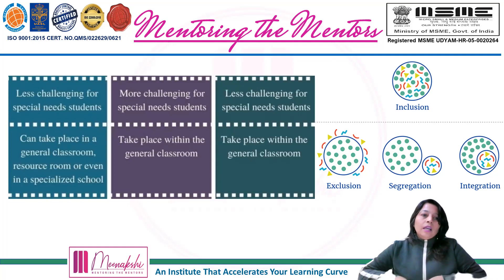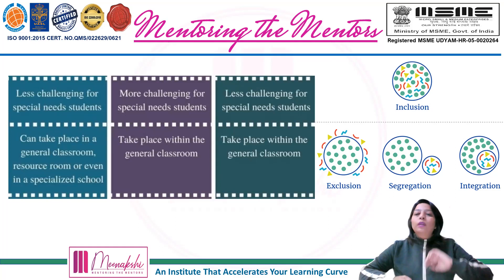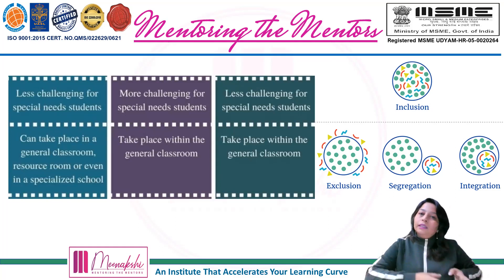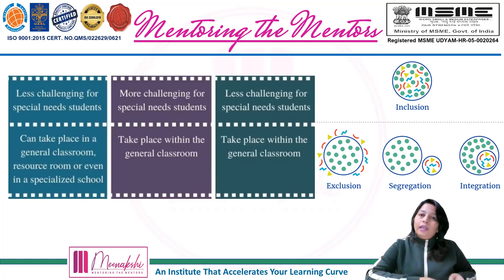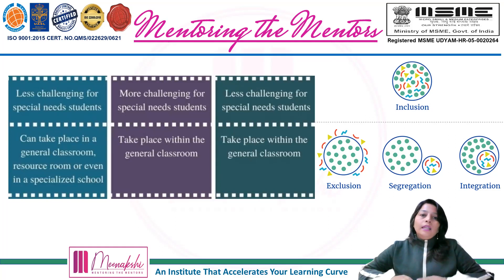Now, in special education, it can take place in a general classroom, resource room, or even a specialized school. Yahan toh special schools hote hain, yahan toh ek normal school mein bhi ek alag classroom ho sakti hai ki special bachchon ki ek alag class hai — Section A inka hai, Section B iska hai. Wuh alag ho gaya.